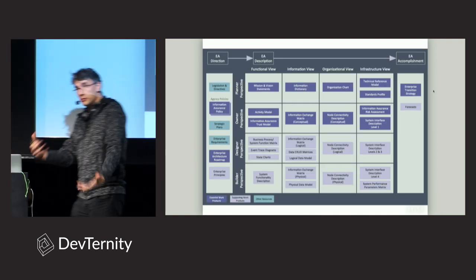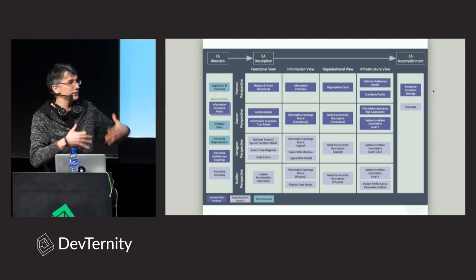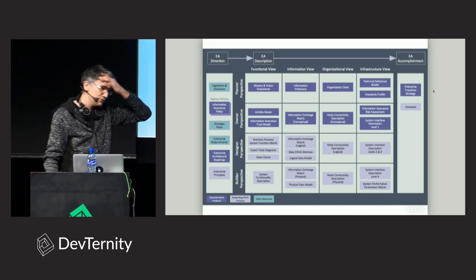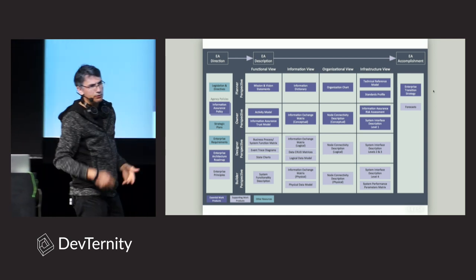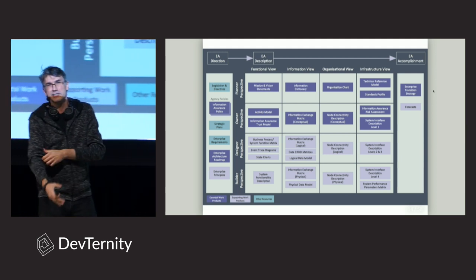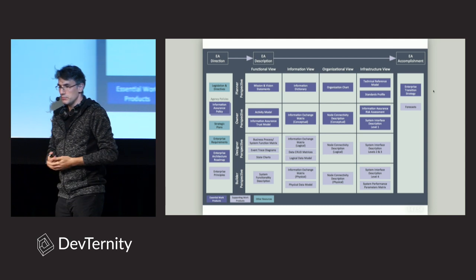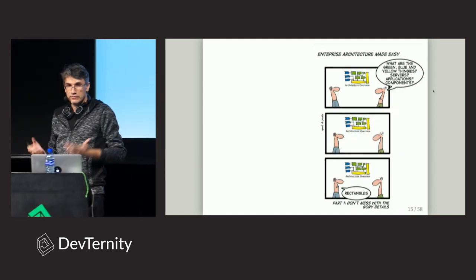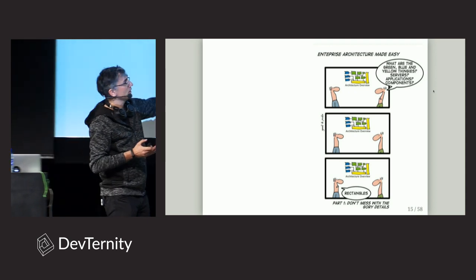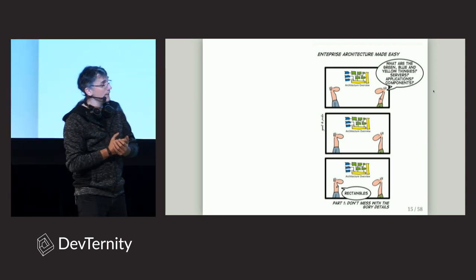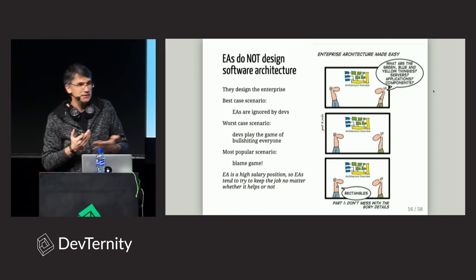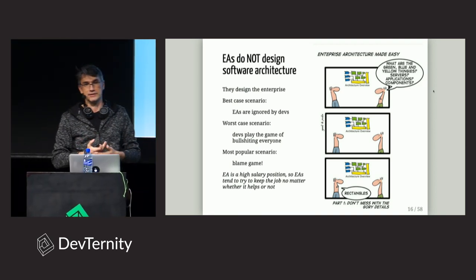Even if you do have arrows, they are very generic and don't give you much information. I thought maybe I just had bad experience working in Poland, but it turned out this is so popular there is even a comic about it. The thing to remember is that enterprise architects should not actually design software systems, because they are way above the technological level of understanding — they do not understand the technology enough to make the decisions.